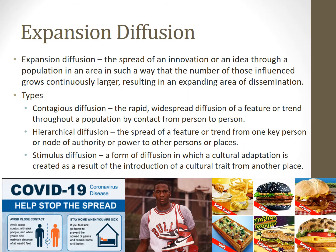But relocation diffusion doesn't exist in a vacuum. After Italians brought pizza through relocation diffusion, it began to expand. Expansion diffusion is the spread of an innovation or an idea through a population in an area in such a way that the number of those influenced grows continuously larger, resulting in an expanding area of dissemination. So remember that we can have two types of diffusion working on a single cultural trait over time, whether that trait is pizza or Christianity.